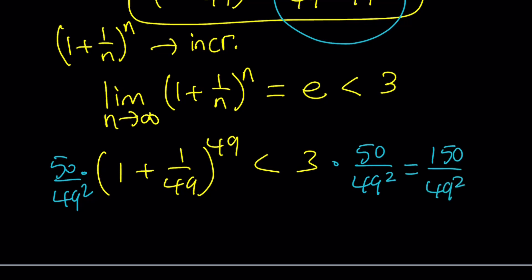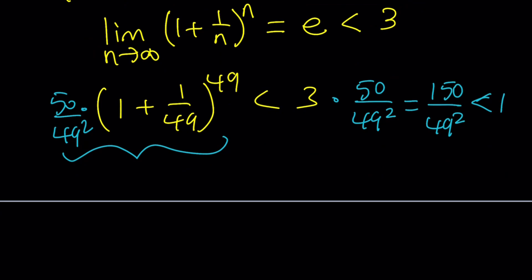That is less than 1. Why? Because 49 squared is definitely much bigger than 150, so the quotient will be less than 1. This implies that this expression is less than 1, which is equivalent to 50 to the 50 over 49 to the 51. That is less than 1, and this implies that 50 to the 50 is less than 49 to the power 51.